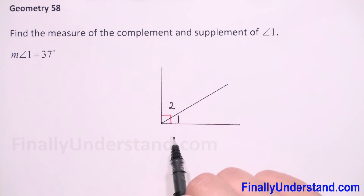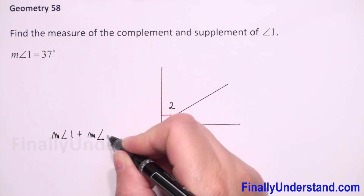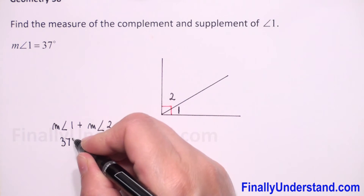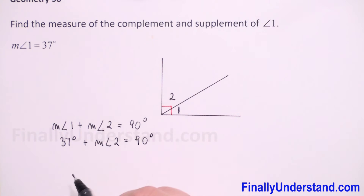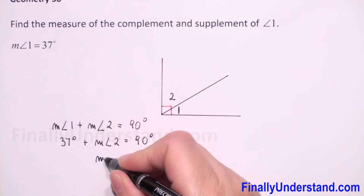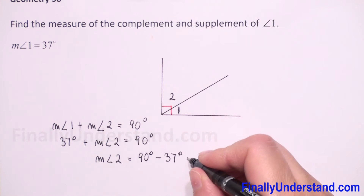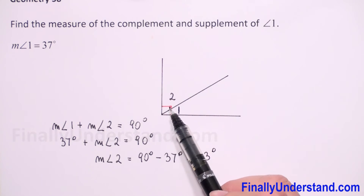We know that two angles are complementary if the sum of their measures is 90 degrees, so we can write the equation: measure of angle one plus measure of angle two equals 90 degrees. We are given that the measure of angle one is 37 degrees, so substituting: 37 plus measure of angle two equals 90 degrees. Moving 37 degrees to the right side, we get measure of angle two equals 90 minus 37, which is 53 degrees.